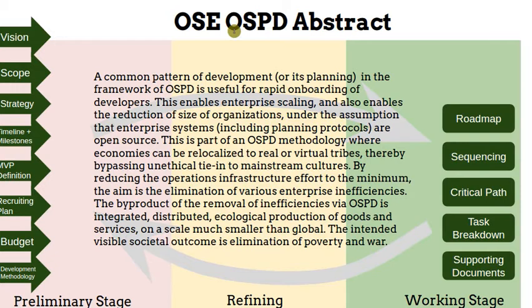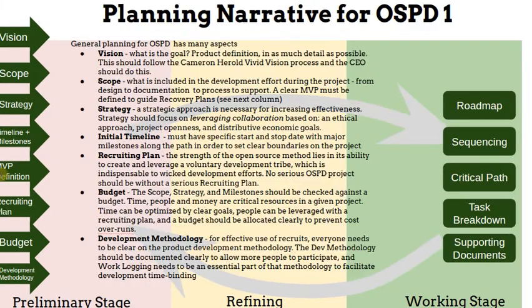Can we go through each one of these to clarify what each one means, starting on slide one? Let's start with vision. I'd like to record this for the future, to dispel misunderstandings or situations where we think we're on the same page. For each one, can you give a concrete example? Step number one: vision — what is the goal? Product definition, as much detail as possible. Use the vivid vision process by Cameron Herold. Vision is: what are you doing, what do you want to do? For example, we want to do affordable housing for everybody.